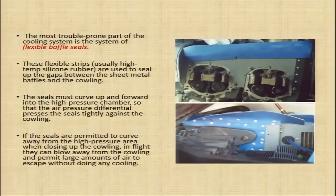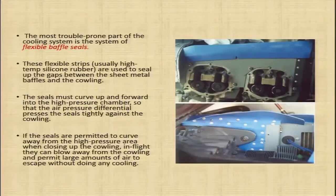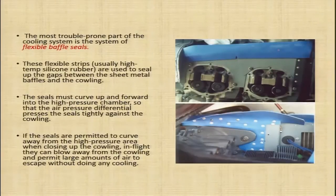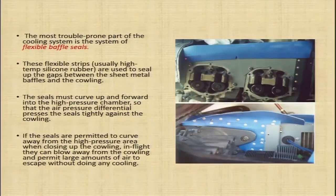The most trouble-prone part of the cooling system is the system of flexible baffle seals. These flexible strips are usually high-temperature silicone rubber. They are used to seal the gaps between the sheet metal baffles and the cowling. In order to seal the gap between the baffles and the cowling, these flexible baffle seals made of high-temperature silicone rubber are used.